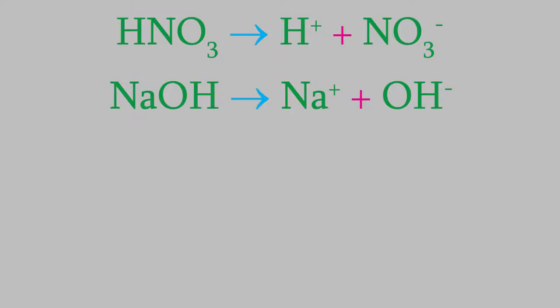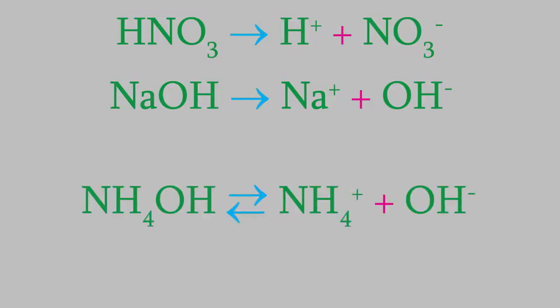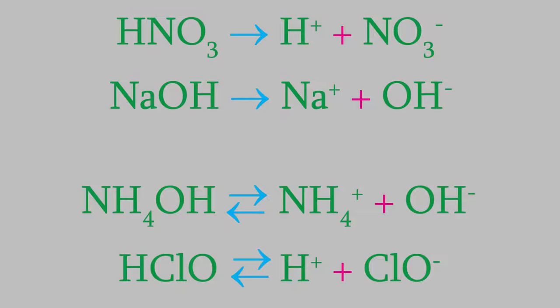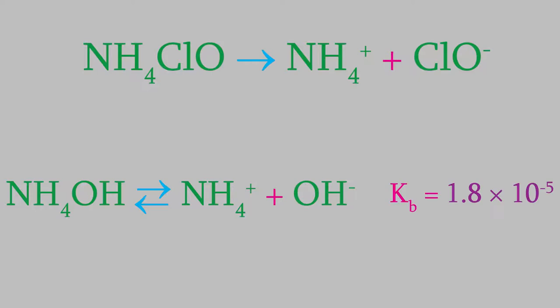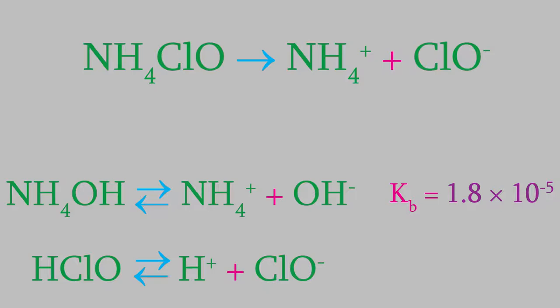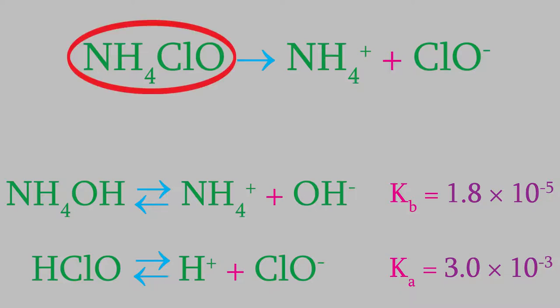Remember, strong acids and bases completely dissociate, so all the acid or base molecules produce hydrogen or hydroxide ions. Meanwhile, weak acids and bases dissociate in reversible reactions, but they don't all dissociate to the same degree. In our solution of ammonium hydroxide and hypochlorous acid, one of these compounds dissociates more than the other. To find out which one, we need to look in appendix D of our textbook, which tells us the equilibrium constants for weak acids and bases. Ammonium hydroxide has a Kb of 1.8 × 10⁻⁵, and hypochlorous acid has a Ka of 3.0 × 10⁻³. The hypochlorous acid has the higher dissociation constant, so overall the acid is stronger than the base. That means this salt solution will be acidic.